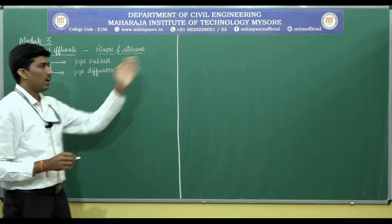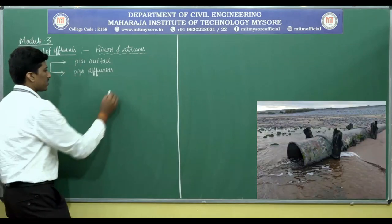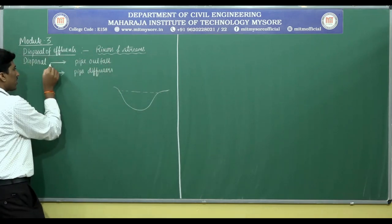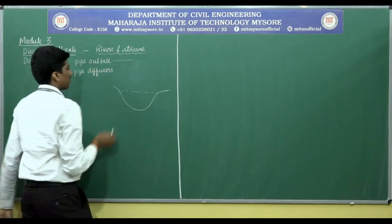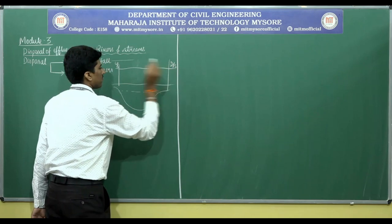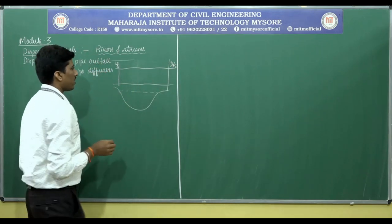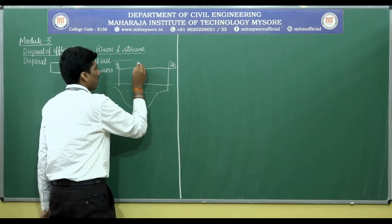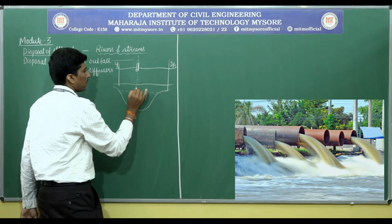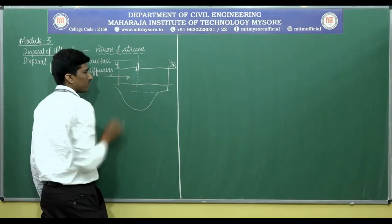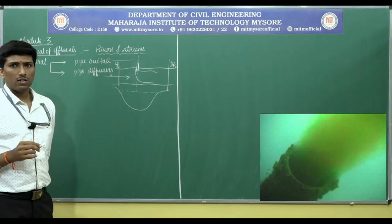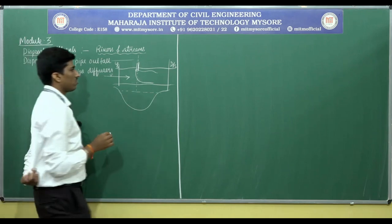Let us get to know the diagrammatic representation. In the case of a pipe outfall condition, consider a waste stream — this is the upstream, and downstream. If there is a disposal of the waste or effluents that are released, normally at this passage the flow is taking place in this direction. U is the velocity; the plume — we call it as a plume — the dispersion of the effluent tends to take place here at this position.